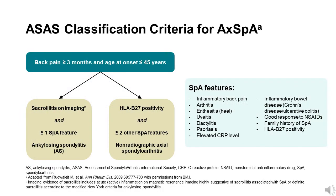The concept of axial spondyloarthritis, which includes AS or ankylosing spondylitis, was first established by a set of classification criteria developed in 2009 by the Assessment of Spondyloarthritis International Society, ASAS. According to the ASAS classification criteria, patients who experience chronic back pain before the age of 45 years have axial SpA if they have imaging evidence of sacroiliac joints by MRI or radiography plus at least one SpA feature, or are positive for HLA-B27 and have two or more other SpA features.